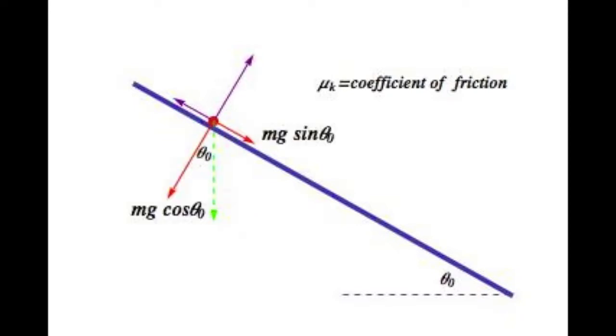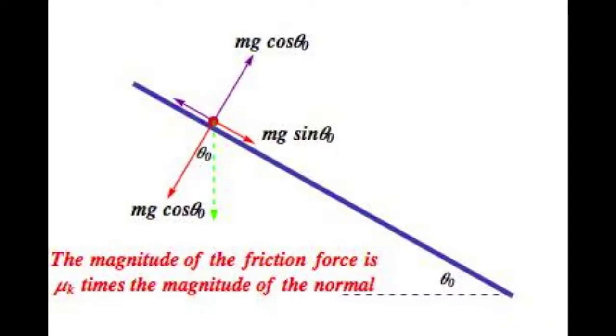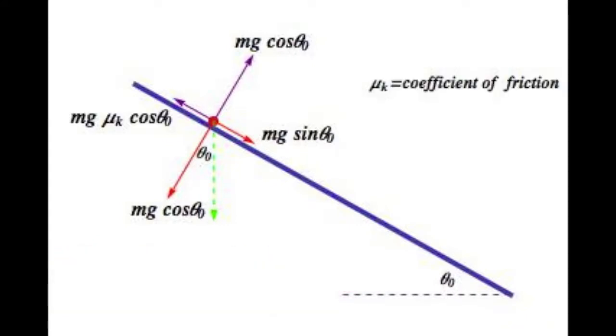We conclude that the magnitude of the normal force must be mg cosine of theta sub zero and the magnitude of the friction force must be mg mu cosine of theta sub zero.